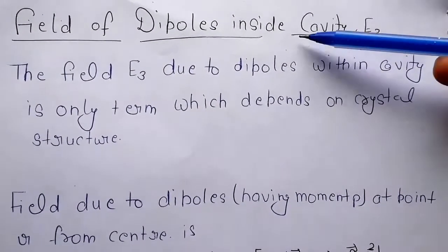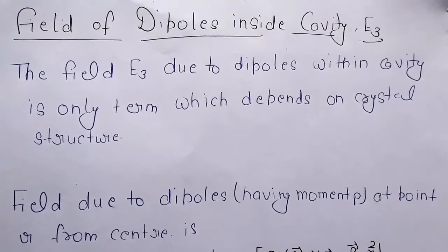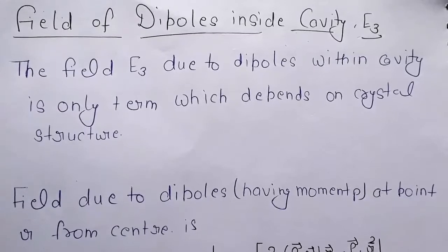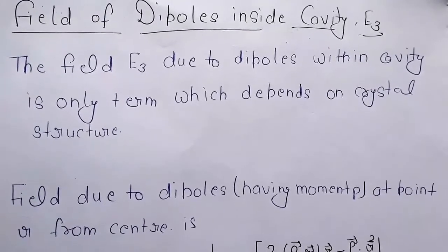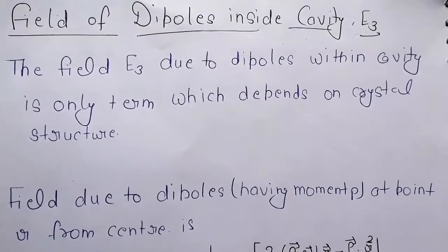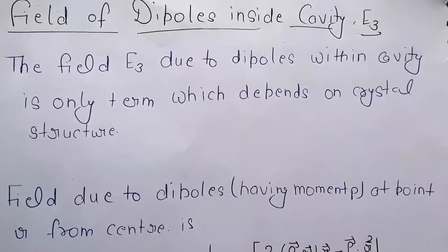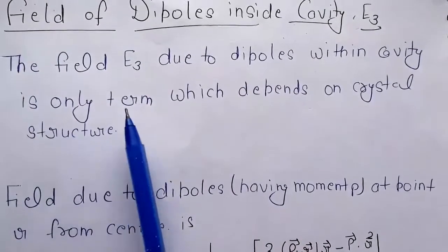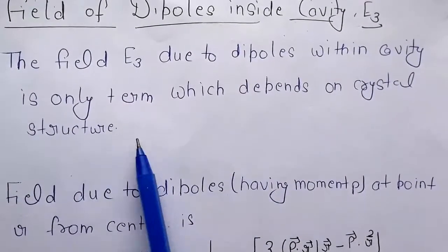The topic is field of dipole inside the cavity E3. We have all the rest of the field E1, E2. We have all dealt in the description box. So E3, the field E3 due to dipoles within the cavity is the only term which depends on the crystal structure.